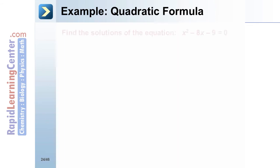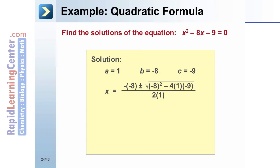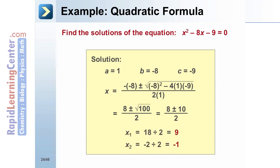Quadratic Formula Example: Find the solutions to the equation x squared minus 8x minus 9 equals 0. Identify the coefficients: a equals 1, b equals negative 8, and c equals negative 9. Plug the coefficients into the quadratic formula: x equals (negative (negative 8) plus or minus the square root of (negative 8 squared minus 4 times 1 times negative 9)) all over 2 times 1. Simplify to get (8 plus or minus the square root of 100) over 2, which equals (8 plus or minus 10) over 2. The solutions are 9 and negative 1.